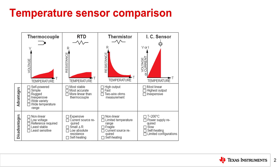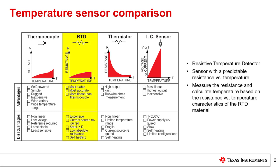Shown here is an overview of the characteristics of some of the most common temperature sensors. These sensors include thermocouples, RTDs, thermistors, and discrete analog or digital temperature ICs. This presentation focuses on resistive temperature detectors, or RTDs.